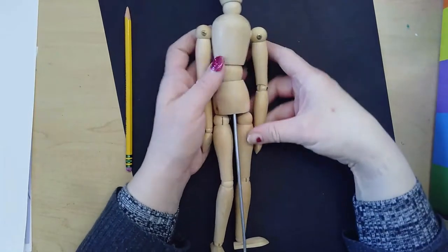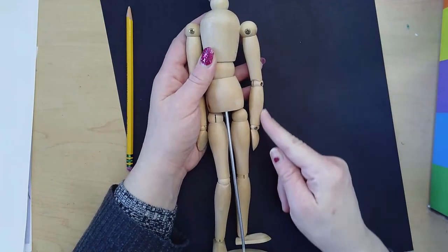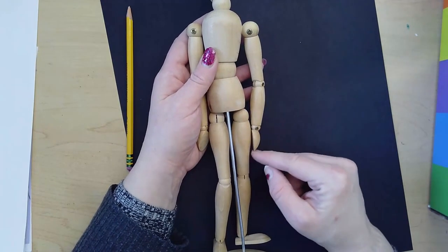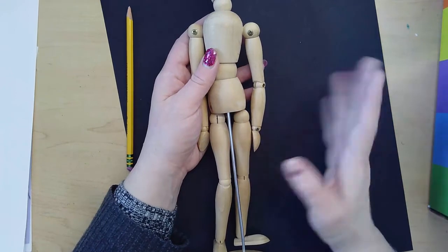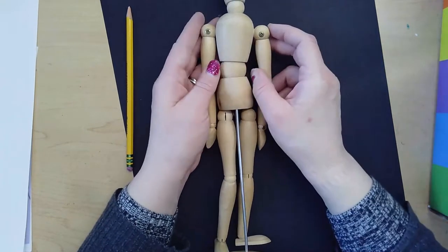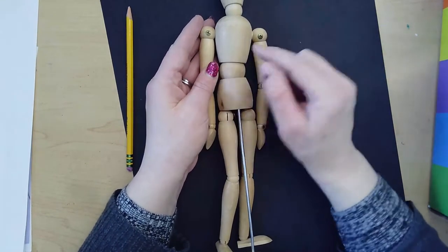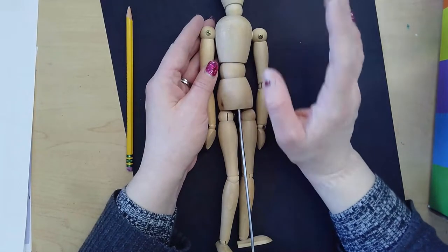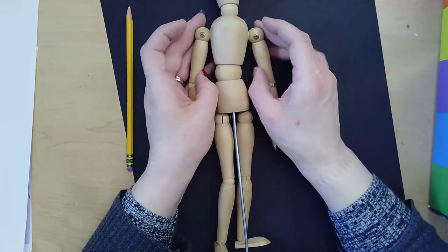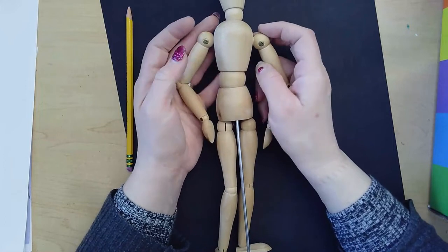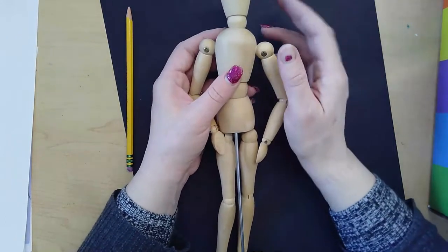The other thing is people very often forget how long arms are. Arms actually go down past the waist all the way down to the middle of the thigh thereabouts. So when you're drawing, make sure you're checking back at your mannequin, comparing these sizes and also checking back to any worksheets or references so you can make sure you are proportionally doing everything correctly.